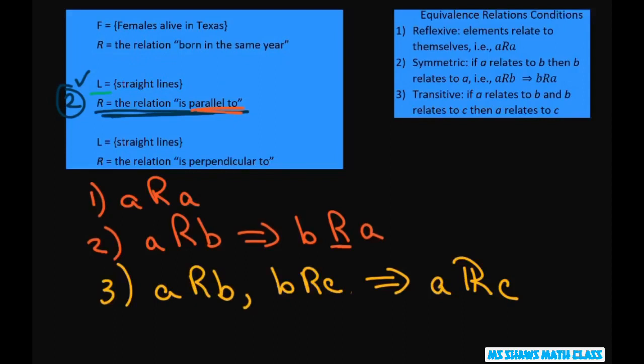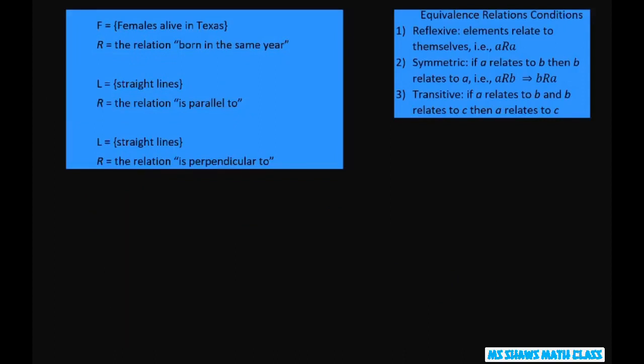And the last one, straight lines. Okay, so is a line perpendicular to itself? So is A perpendicular to itself? And this is no. So we're going to say does the relation R form an equivalence on set L, the straight lines. And that's no.